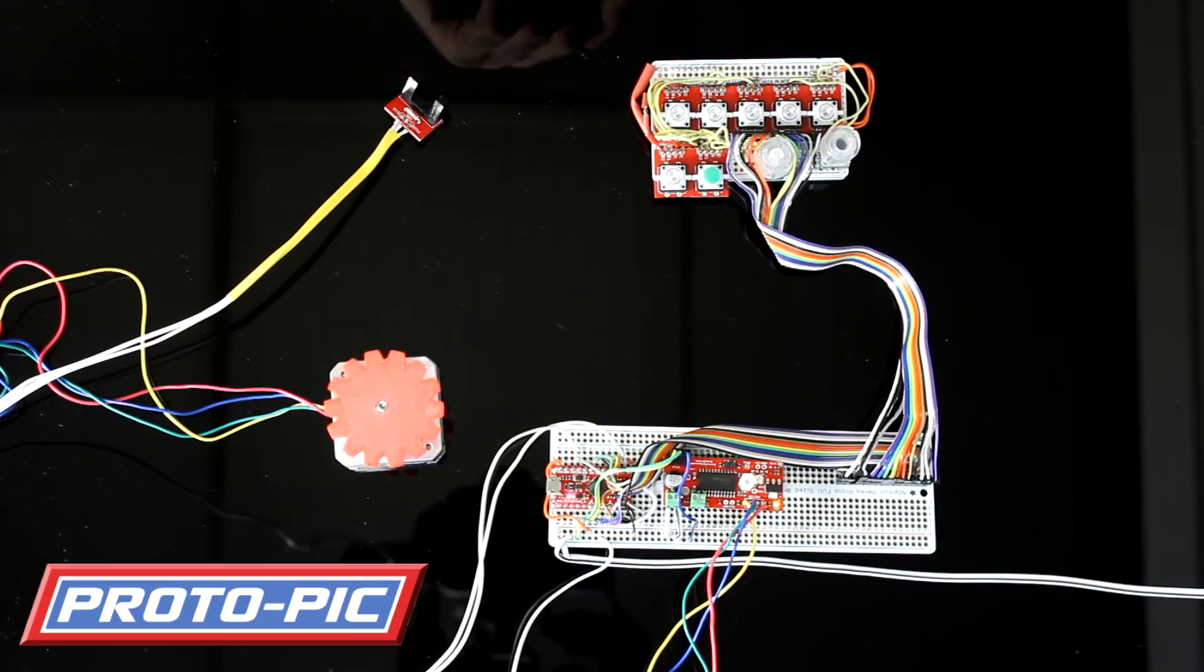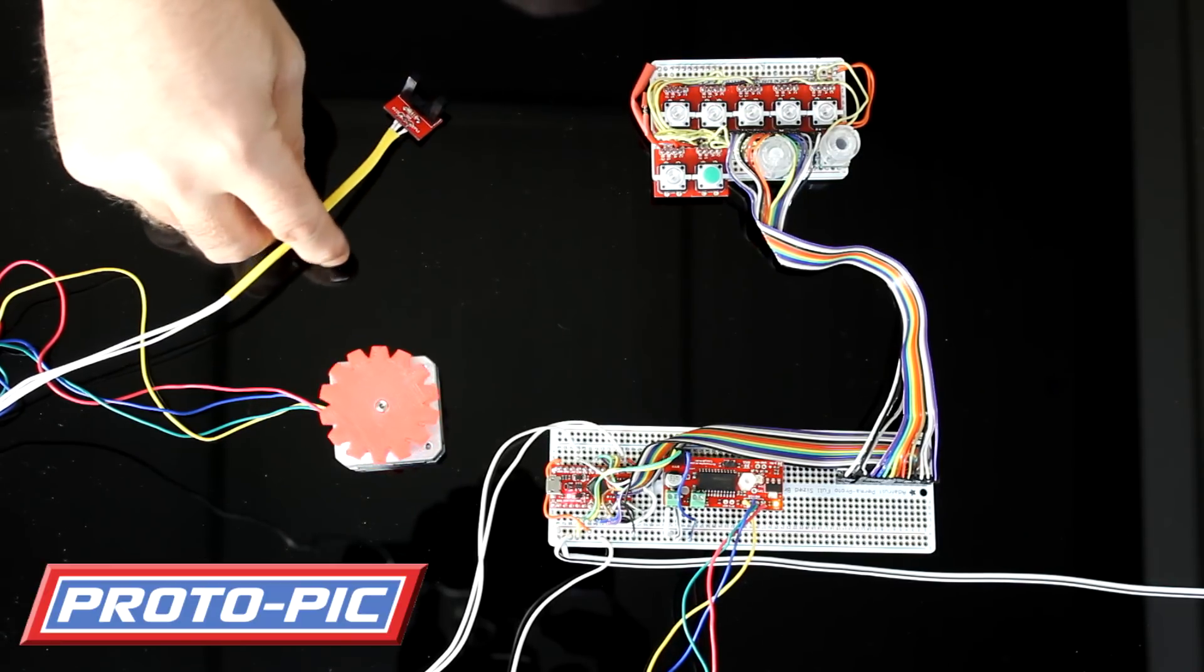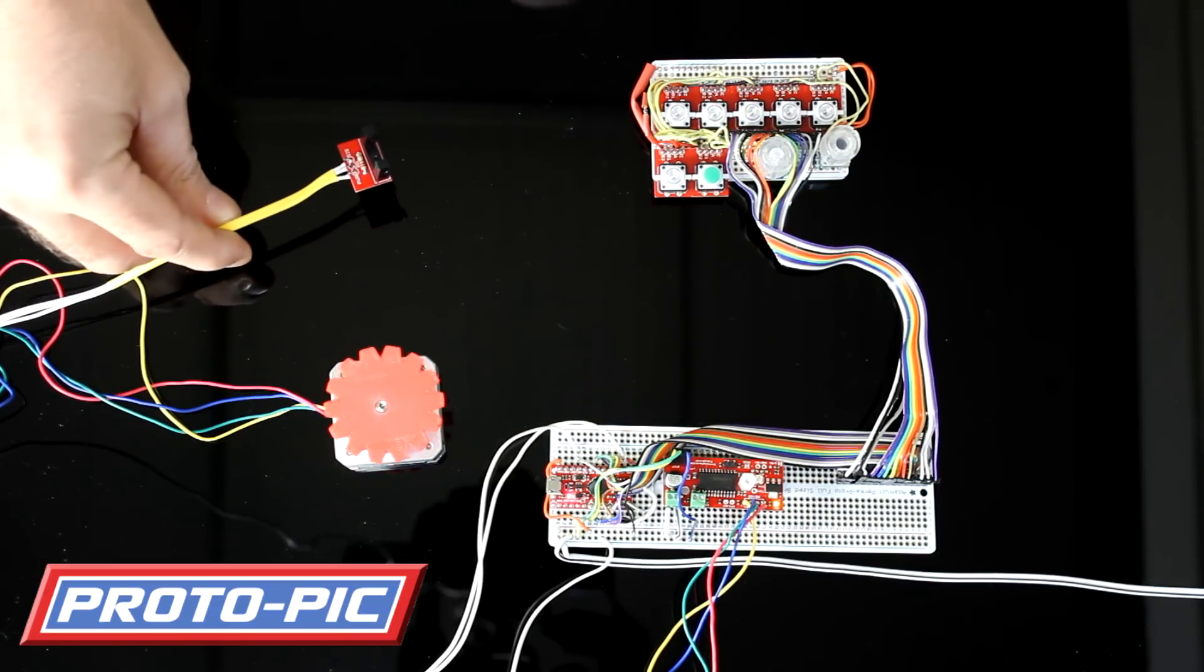So when you first switch it on, what it's doing is it's sampling the signal here on an infrared brake beam detector.